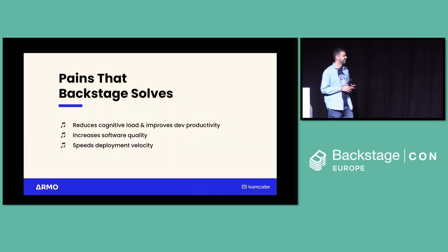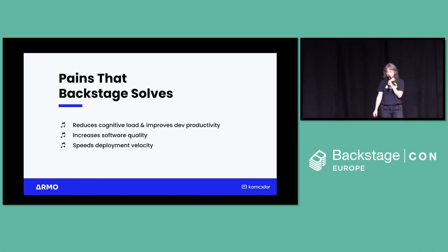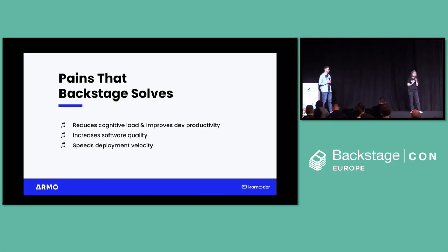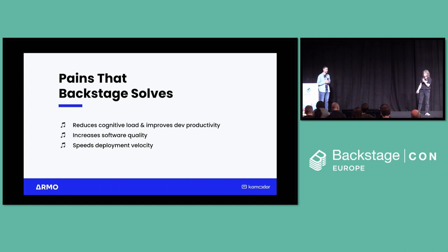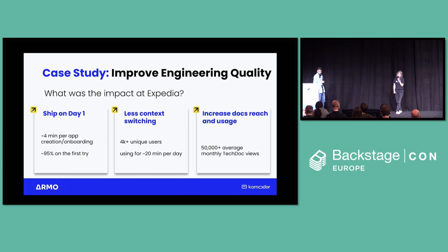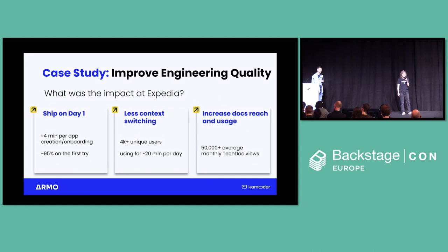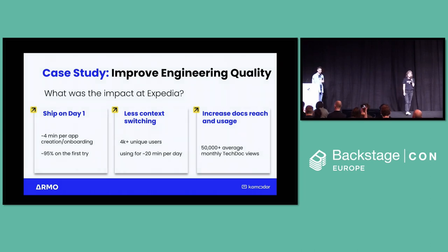We all feel pain. Backstage solves some of that pain. At a high business level that all of our bosses will like, it increases software quality — DevOps people don't have to wake up at night — and it speeds up deployment velocity, which is another great business KPI. It also reduces cognitive load and improves our productivity. Expedia implemented Backstage and found they could ship successfully on day one, with less context switching and increased reach and usage of docs, which promotes developer independence.